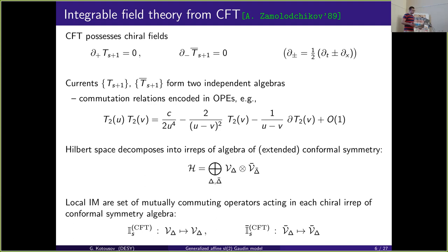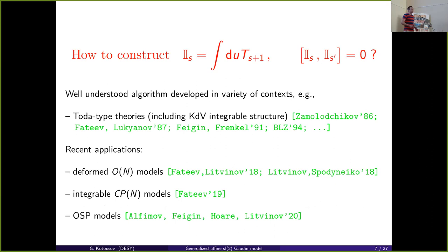The local integrals of motion form a mutually commuting family of operators. Each I_s is given by an integral over chiral fields and acts on the left part of the module for the extended conformal symmetry algebra. The construction of this commuting family in a representation of the Virasoro or W-algebra is a well-defined mathematical problem. There is a well-understood algorithm developed in the context of Toda-like theories and the KdV integrable structure.